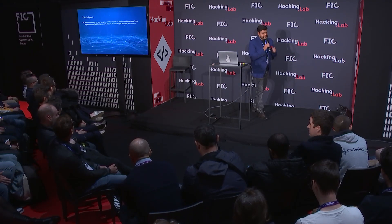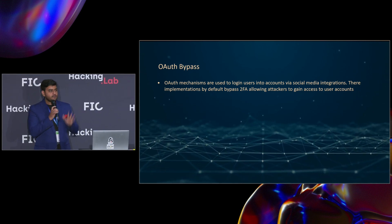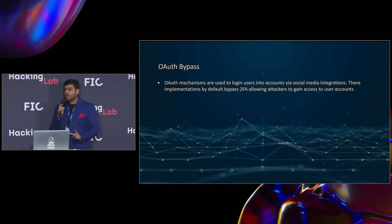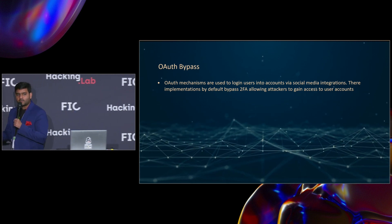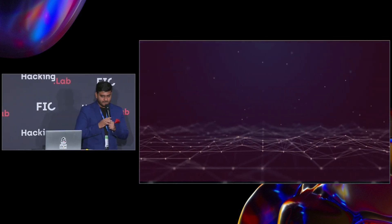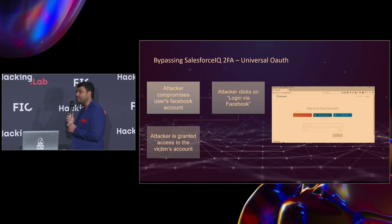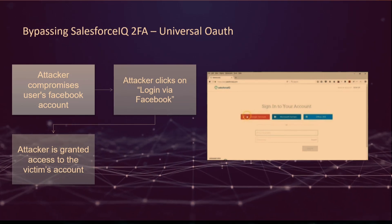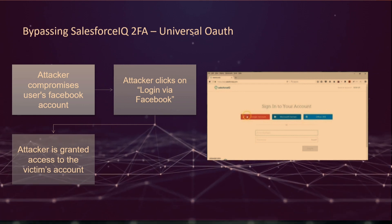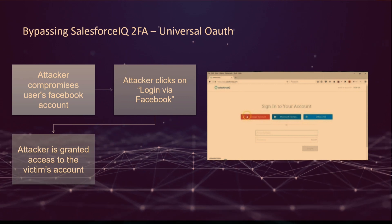One of the easiest and most commonly found ways to bypass 2FA is always OAuth. OAuth is everywhere — log in with Google, log in with Facebook, log in with different kinds of websites. There is no 2FA validation on 93% of OAuth-implemented websites. Which means that if you click log in with Facebook or log in with Google, you will not be encountered with a 2FA code parameter.